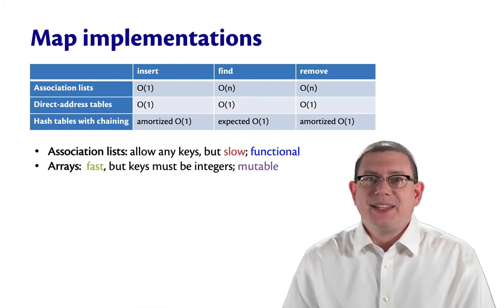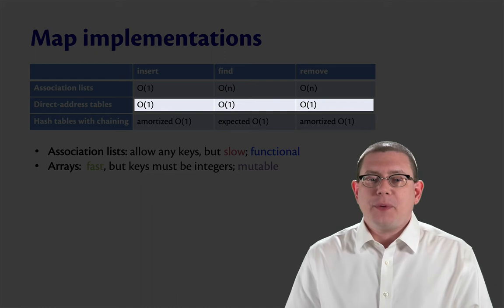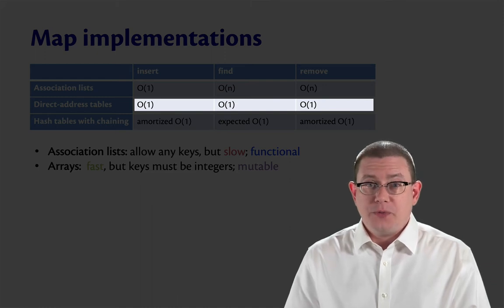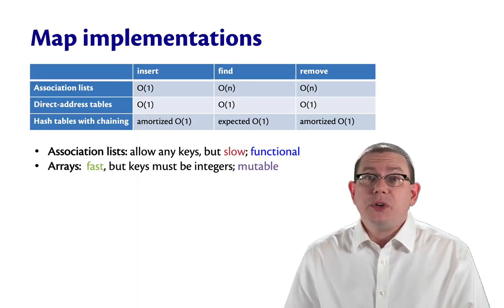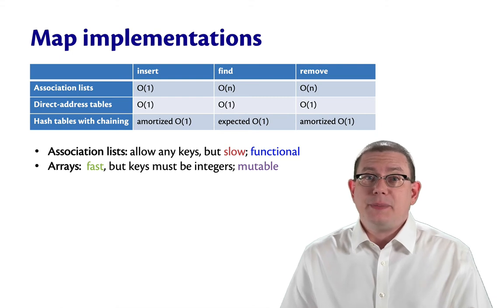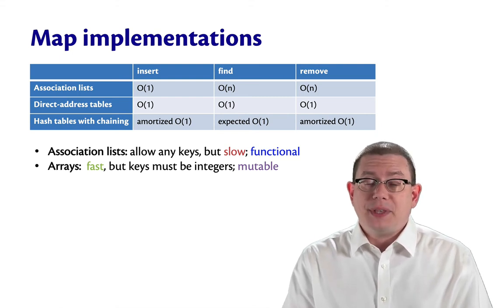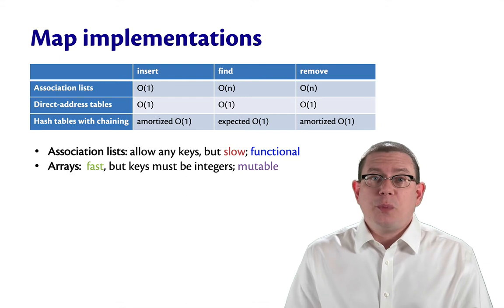Arrays were fast. They had constant time operations for insert, find, and remove. But they came with a rather severe limitation that the keys had to be integers. We'd like more flexible maps than that. They're also mutable.